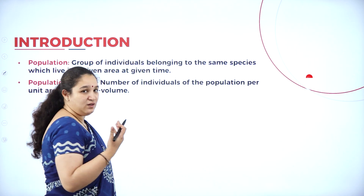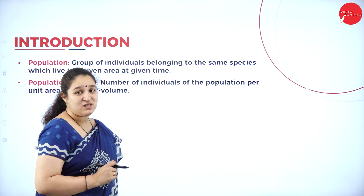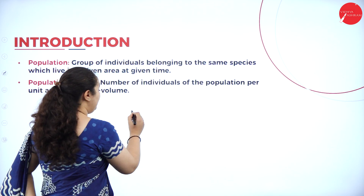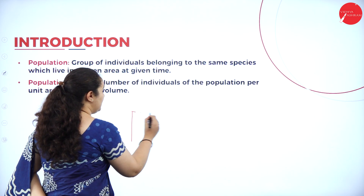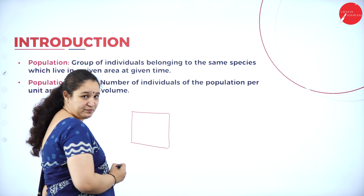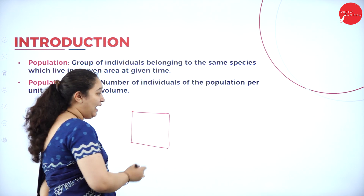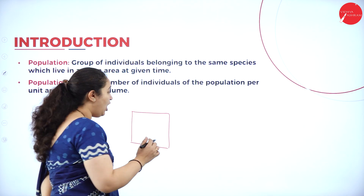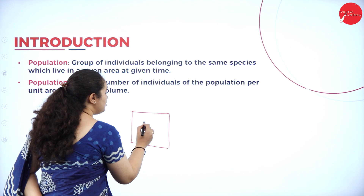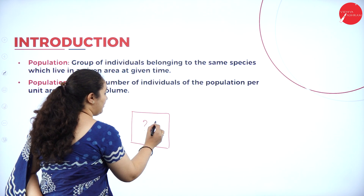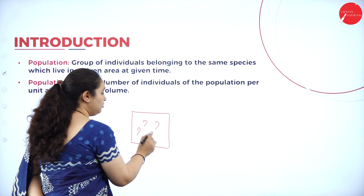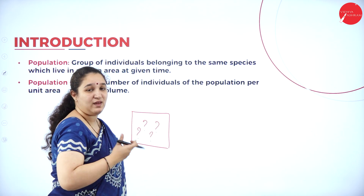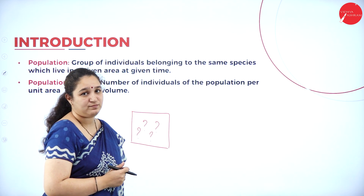For example, human beings are of the same species. So if this is a particular area, at a particular time, how many individuals are there? If I count them, if I put together, then we call it as the population.